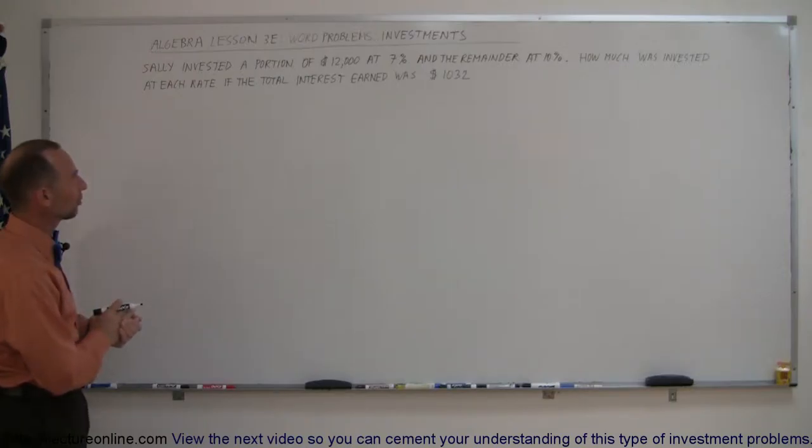Sally invested a portion of $12,000 at 7% and the remainder at 10%. How much was invested at each rate if the total interest earned was $1,032?